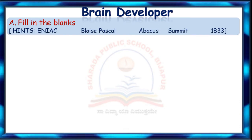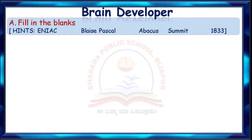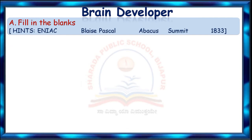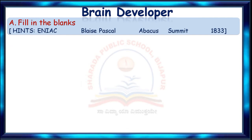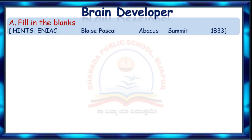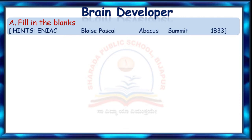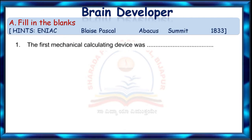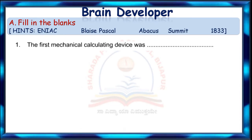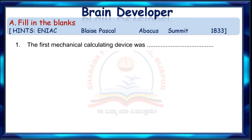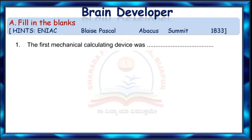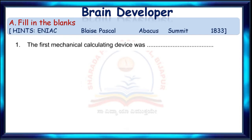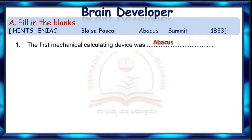Brain Developer. A. Fill in the blanks. The hint words are: ENIAC, Blaise Pascal, Abacus, Summit, 1833. Question 1: The first mechanical calculating device was blank. Children, can you guess the answer? Yes, you are right. Abacus.